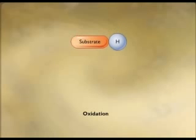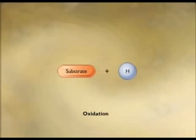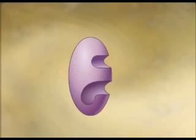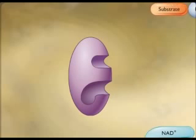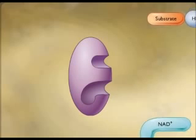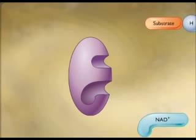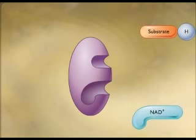Oxidation can be defined as the removal of hydrogens from a molecule. Since a hydrogen consists of a proton and an electron, a proton and an electron are removed during oxidation. Whenever a molecule is oxidized and hydrogens are removed, another molecule must be reduced, with hydrogens added to it.